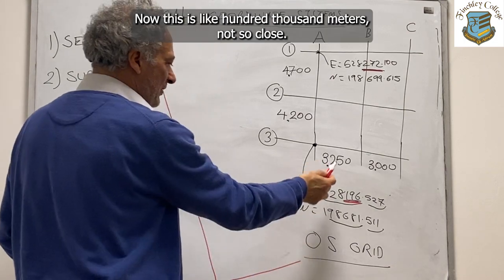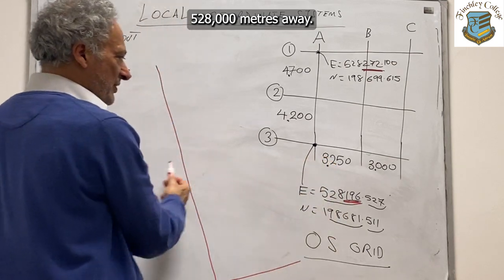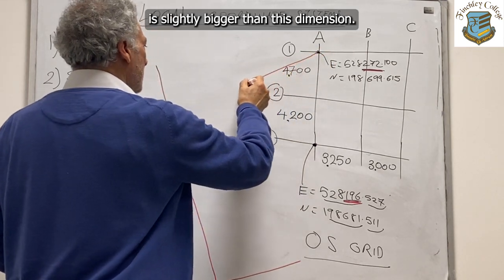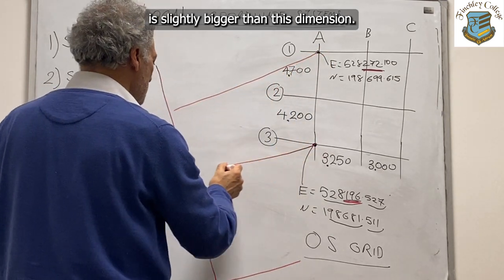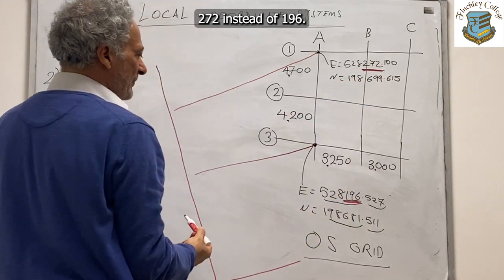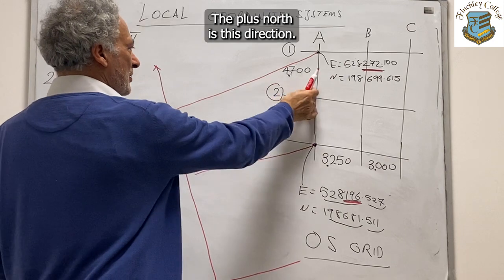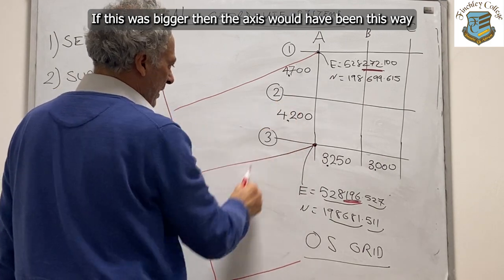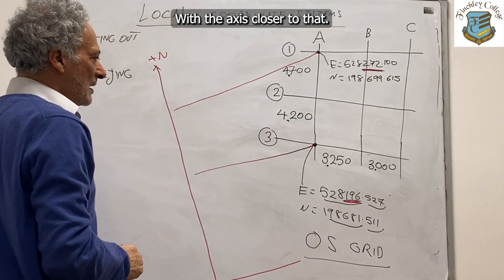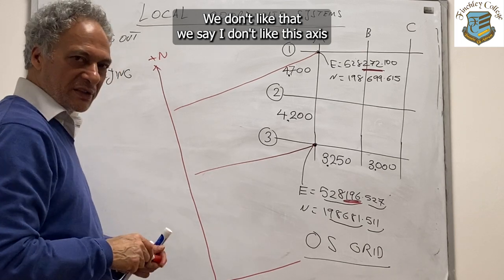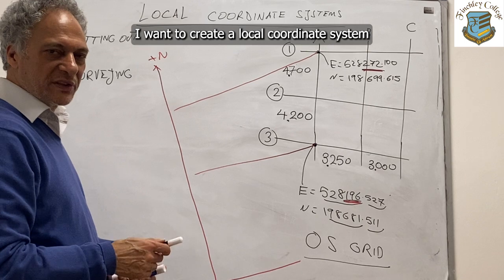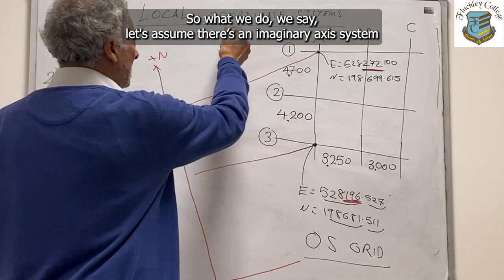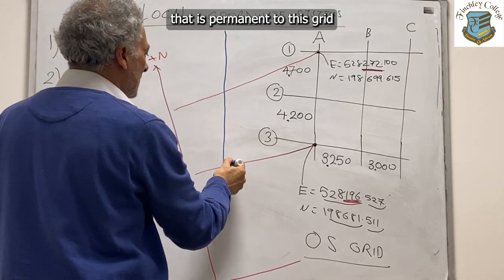That means the axis is something like that — this is about 500,000 meters away; I'm just drawing on the board to indicate how it looks. Because this dimension is slightly bigger than this dimension — 272 instead of 196 — that indicates the axis is pointing away from the grid line. Plus north is this direction. If this was bigger, the axis would be closer to this direction.